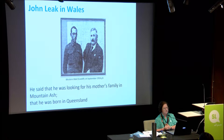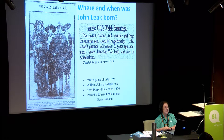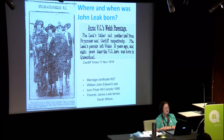In the Western Mail, September 1916, he said he was looking for his mother's family in Wales, Mountain Ash in Wales — and he was born in Queensland. The local studies librarian shot straight back: why aren't you looking in Queensland? When he's overseas, he's saying he was born in Queensland. When he's in Queensland, he's saying he was born in Portsmouth, Hampshire. Very interesting. And she sends a cutting from one of their newspapers showing them leaving after he's been awarded his VC. The caption reads: Private Leake's father and mother hailed from Bryn Mawr and Cardiff — I left Wales 30 years ago.